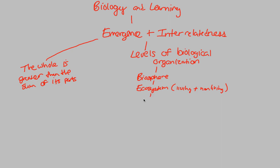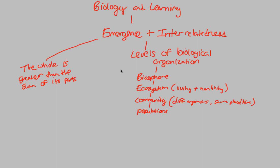Within the ecosystem, we have a community. A community now officially excludes the non-living — it only talks about living things, specifically different organisms at the same place and the same time. Within the community, we have populations. Remember, when we talk about these organization levels, we're looking at emergence — this is the emergent property of life, going from big to small.